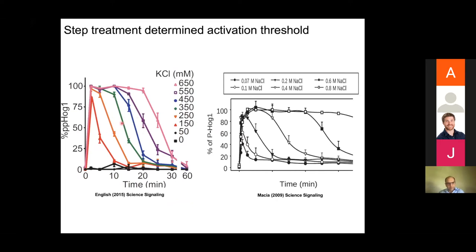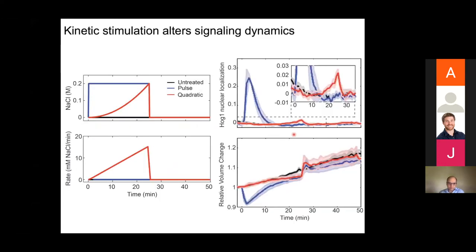We developed automated image processing software that can track individual cells and quantify the ratio of nuclear to cytoplasmic intensity, plotted as HOG1 nuclear enrichment. We find, as others have also found, that upon different stress you get adaptive behavior, which can be described by an integral feedback loop that measures relative changes between external osmotic pressure and internal osmotic pressure. Previously, people exposed cells to different salt concentrations and found a threshold of activation of around 50 mM NaCl or KCl required to activate the pathway, measured by phospho-blot or quantitative western blot.